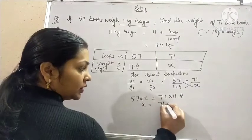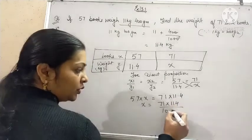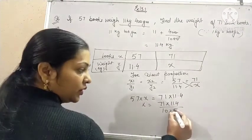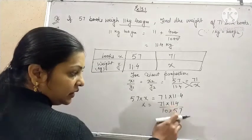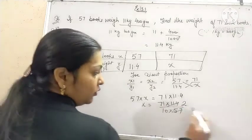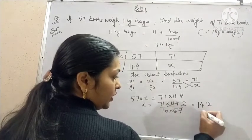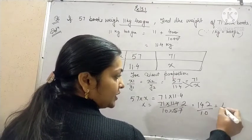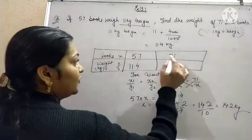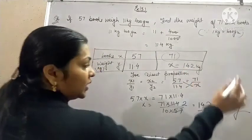X will be equal to, I am removing the decimal by taking 10 in the denominator. And this 57 is in multiplication will go in division. Now it is clearly visible that 57 into 140 is 14. Do the multiplication. 142 by 10, that is equal to 14.2 kg. So the weight of 71 books will be 14.2 kg.